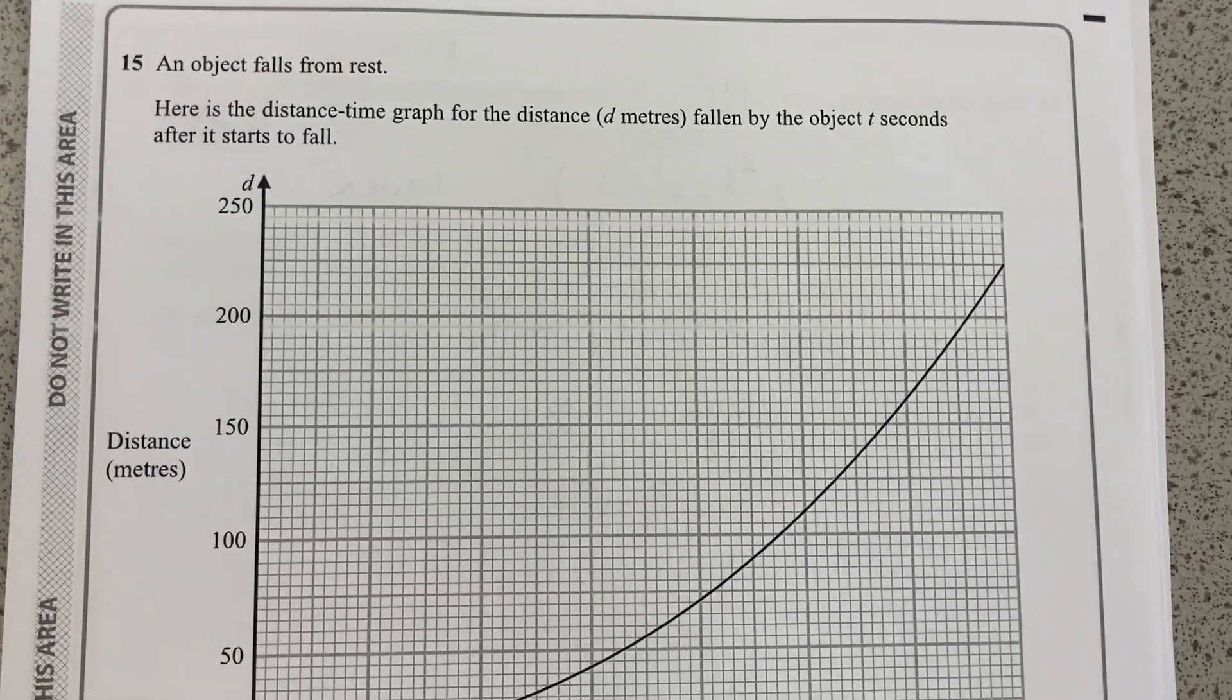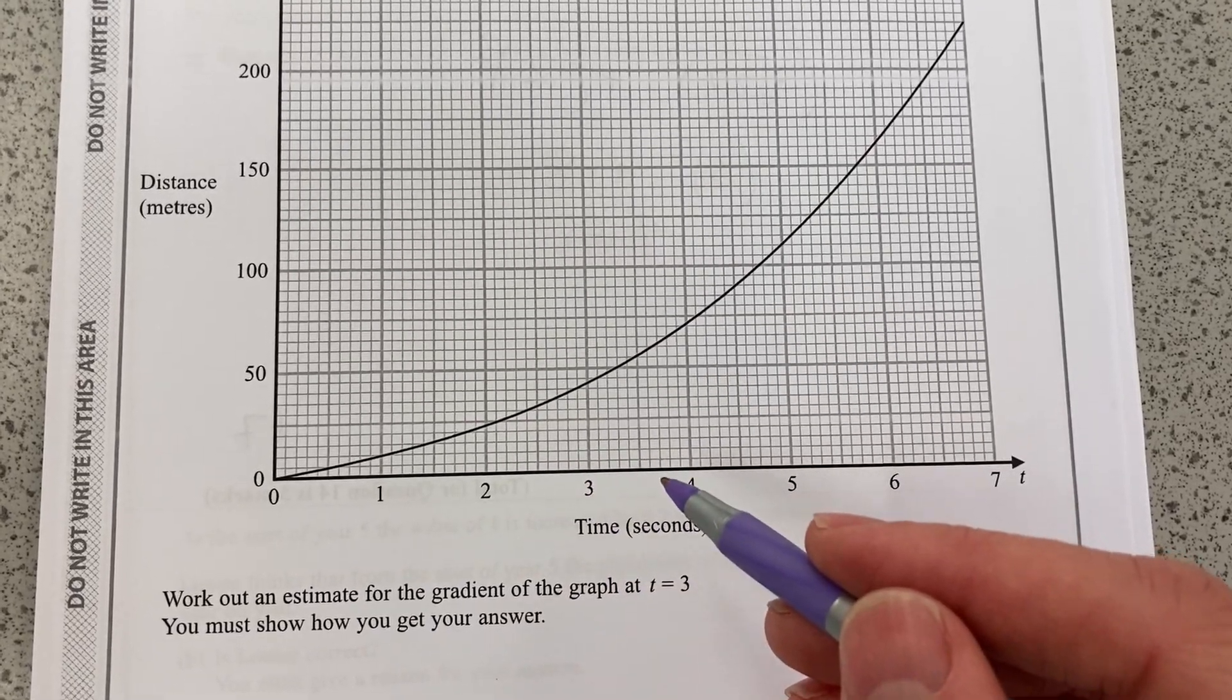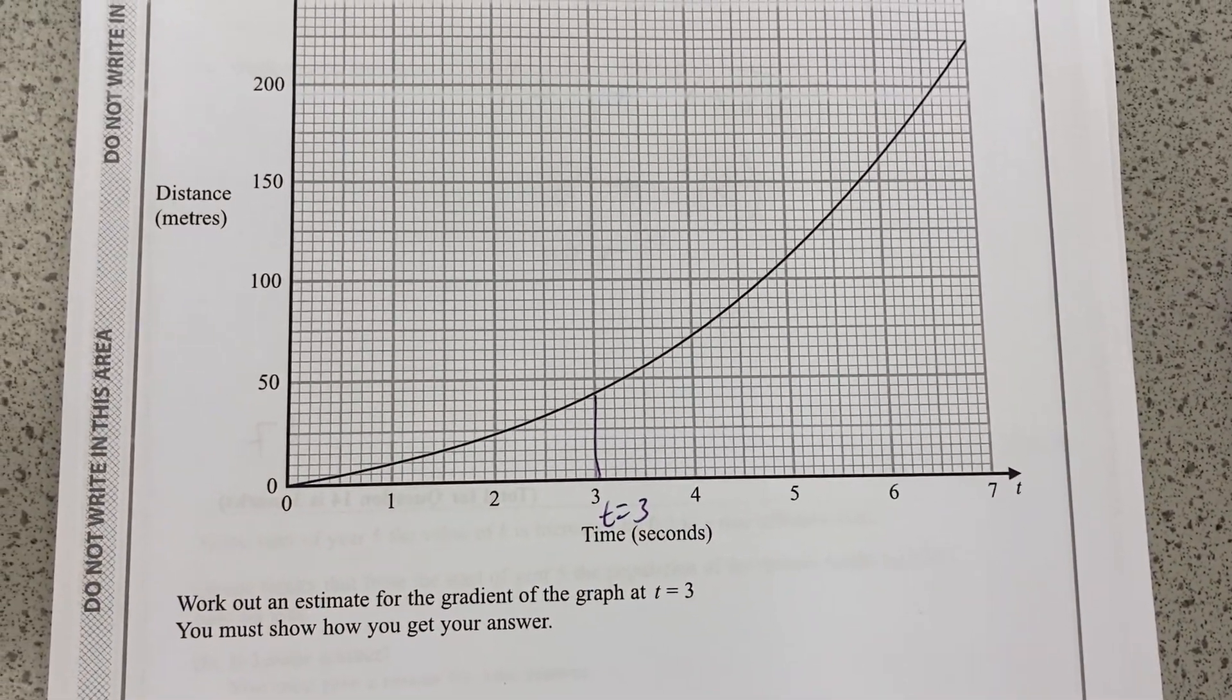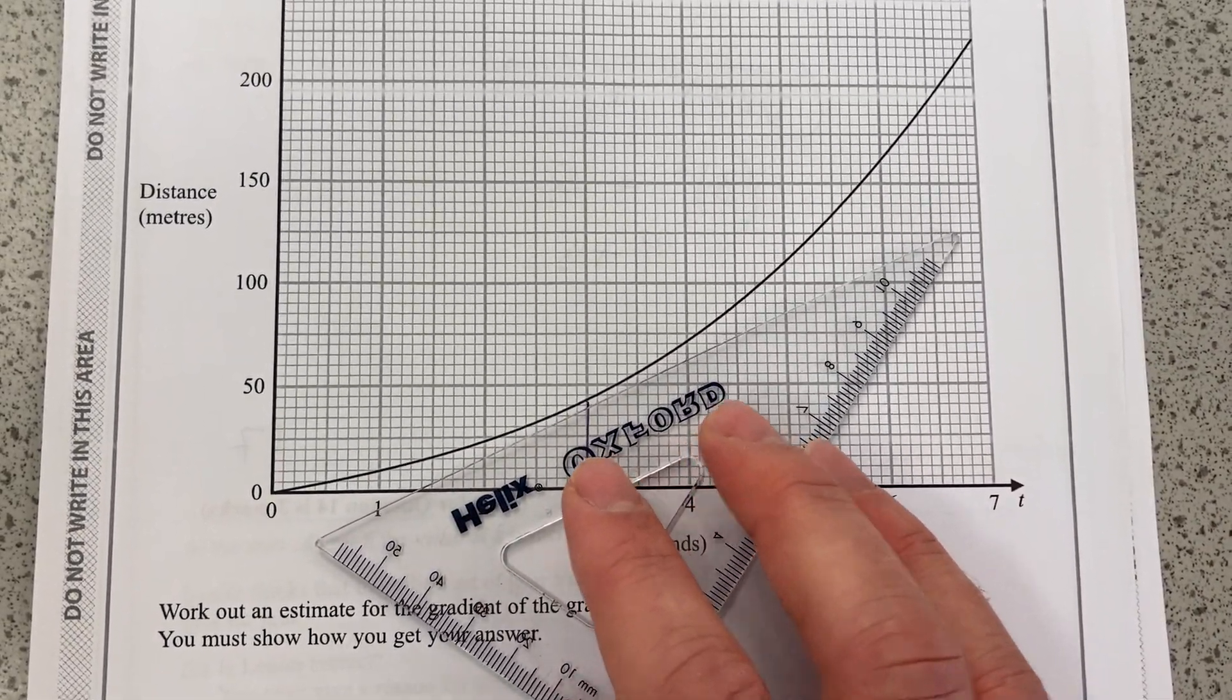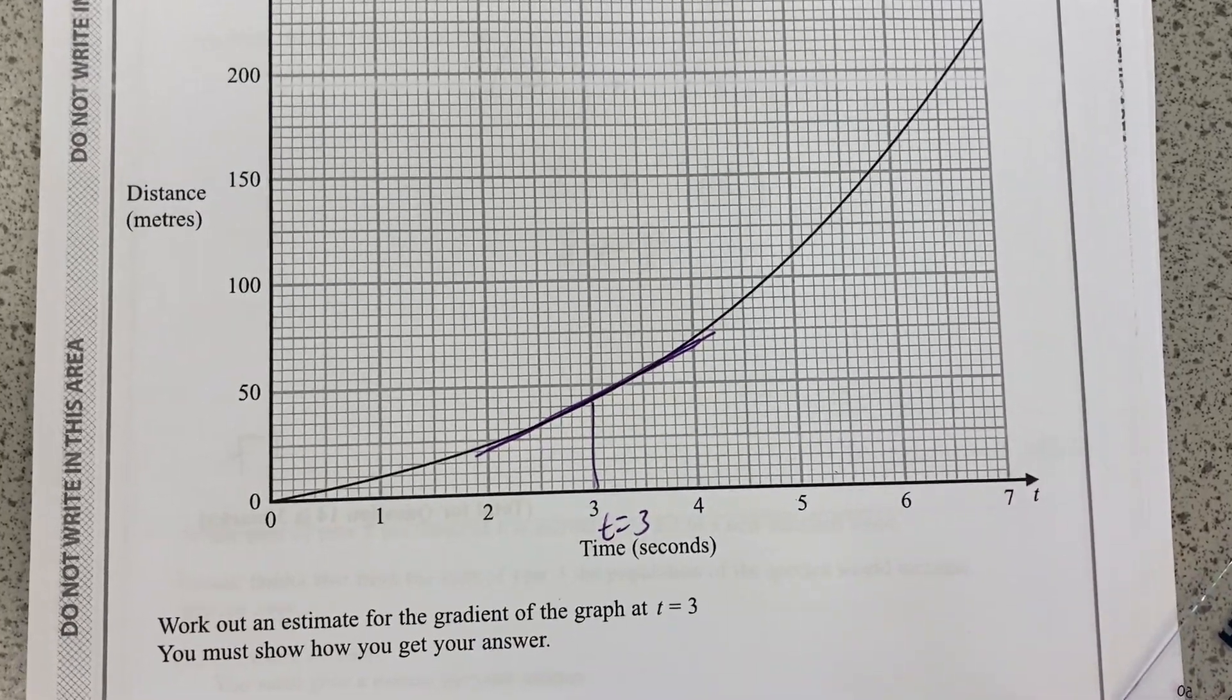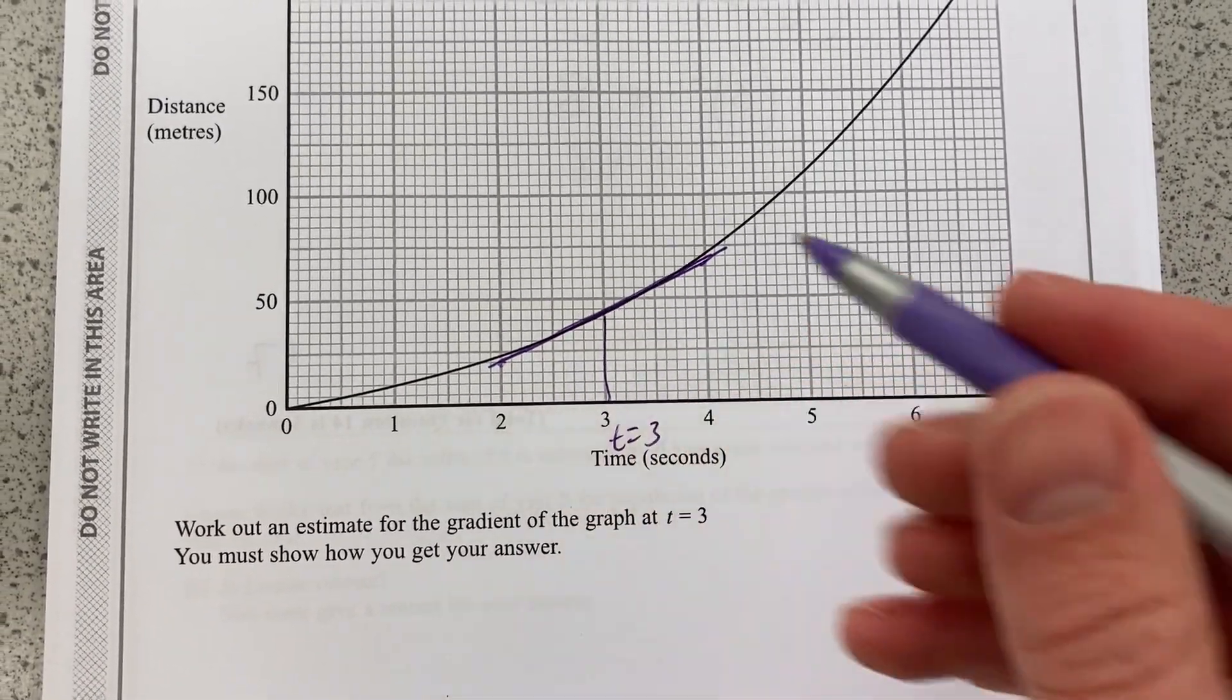Question 15. An object falls from rest. Here's the distance time graph. And we have to work out an estimate for the gradient of the graph at t equal to 3, and that's t equal to 3 there. You must show how you get your answer. What you must show is a tangent. You must draw a tangent there. Preferably use a pencil. I'm using my pen there. And at that point, I'm then going to say, well...